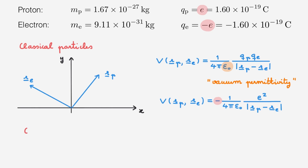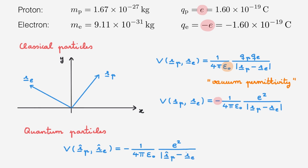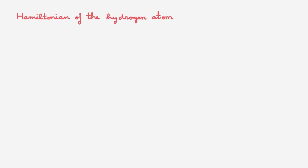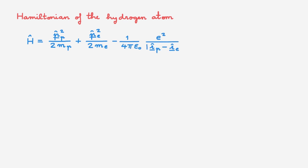If we now consider the proton and electron to be quantum particles, then all we have to do is to apply the usual quantisation rule and promote the classical electrostatic potential to be an operator. This means that V depends on the position operators for the proton and the electron, and is equal to the same expression as above, but now the position coordinates become operators. We're now ready to write down the Hamiltonian of the hydrogen atom. The Hamiltonian H is given by the kinetic energy of the proton, which takes its usual form, plus the kinetic energy of the electron, which also takes its usual form, plus the potential energy described by the electrostatic interaction that we've just discussed. This Hamiltonian is one of the most important Hamiltonians in the whole of chemistry and the whole of physics.